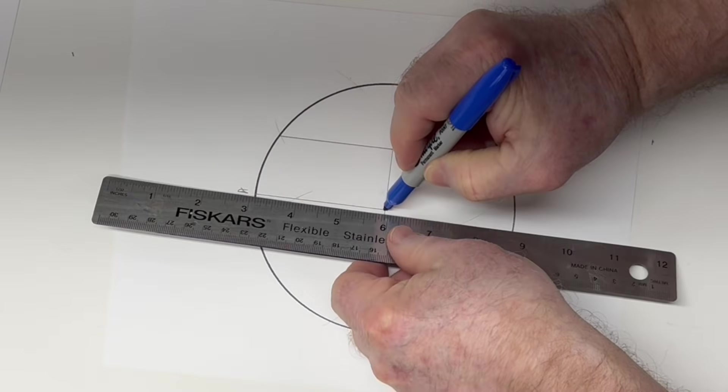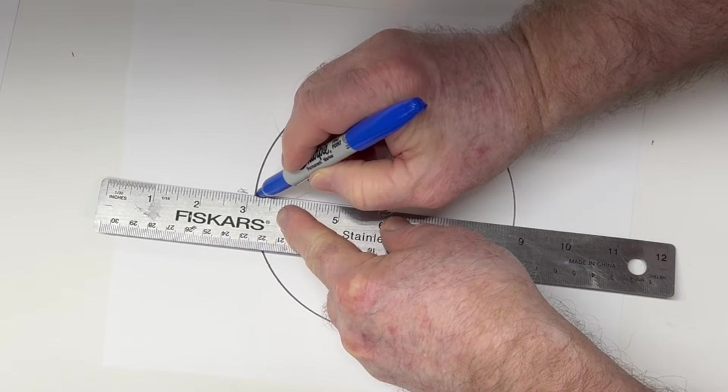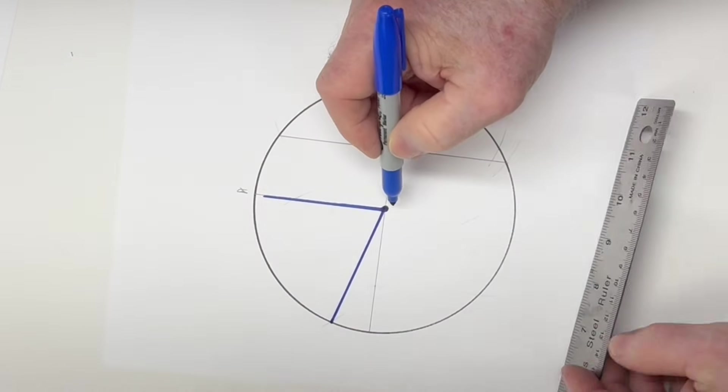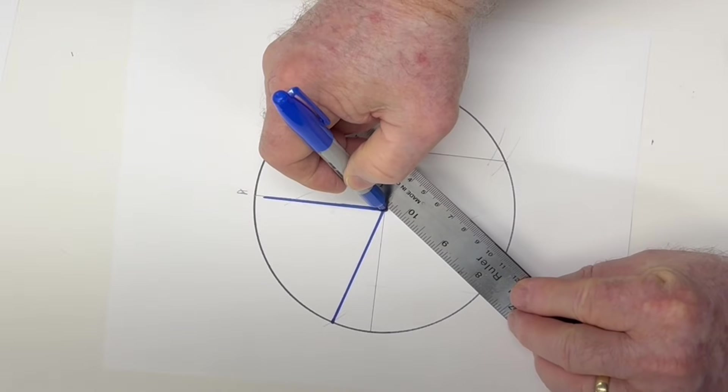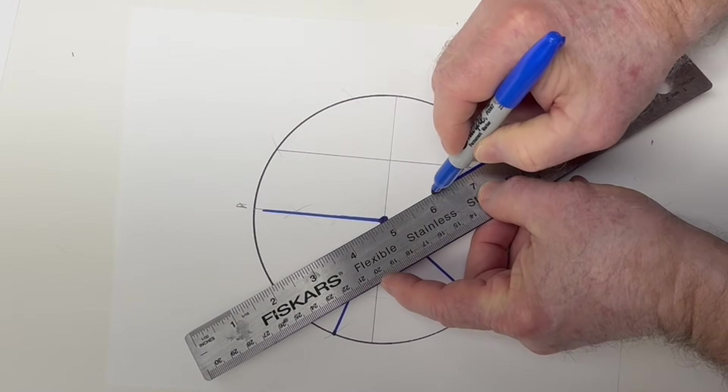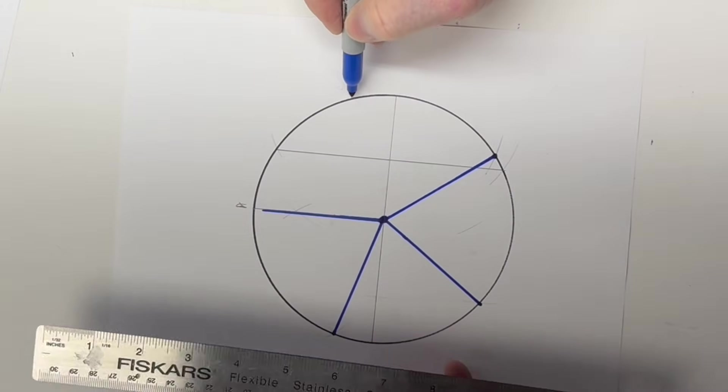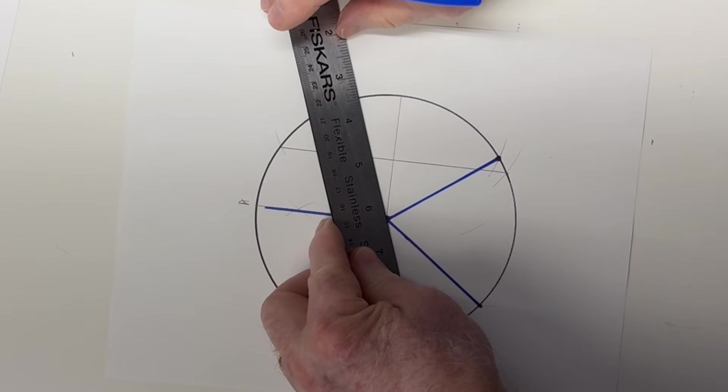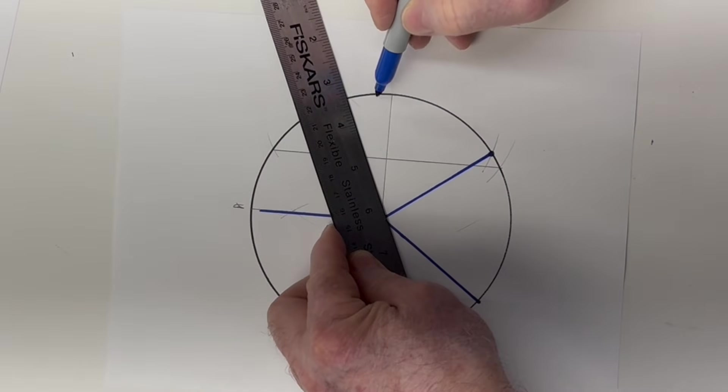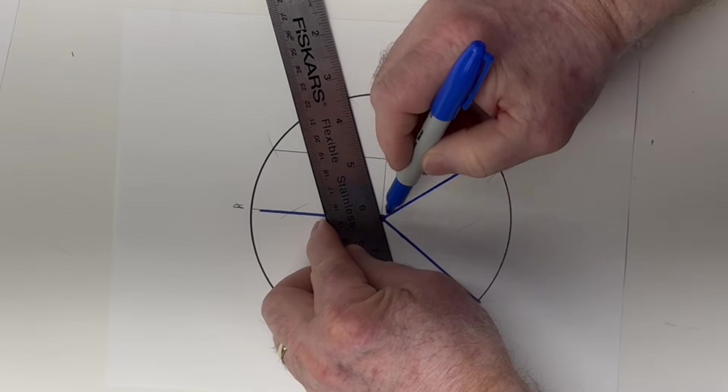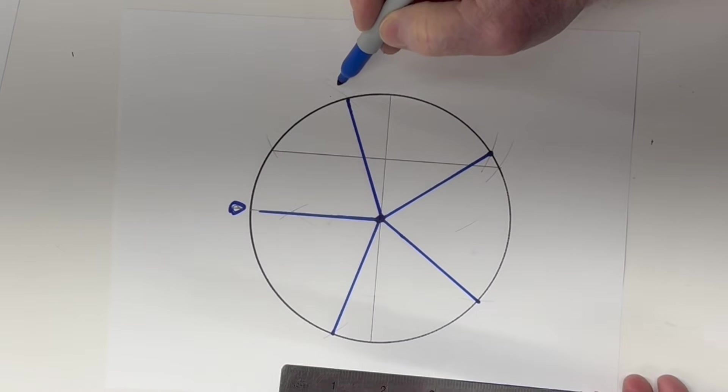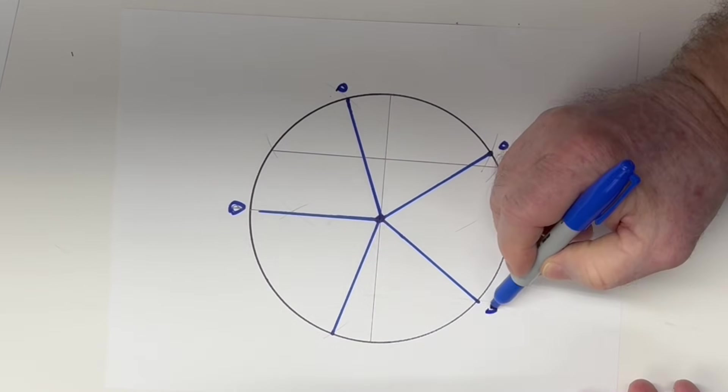So, I'm going to start right here at the center. And I'm going to draw that up to there. That's one. Starting at the center. That's two. Starting at the center. That's three. This one right here. Four. And the last one is right here. So, we have point one, two, three, four, and five.